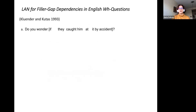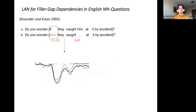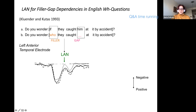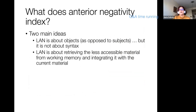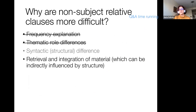The LAN also appears in WH questions: comparing 'do you wonder if they caught it by accident' versus 'who do you wonder who they caught by accident,' you get the LAN because you haven't yet integrated the filler. Anterior negativity indexes working memory — retrieving less accessible material from working memory and integrating it with the current material. So we ended up rejecting two explanations based on primary data, and the ERP data tells us that the structural difference between relative clauses is only a mediated effect. We interpret this neural signature as a sign of retrieval and integration.